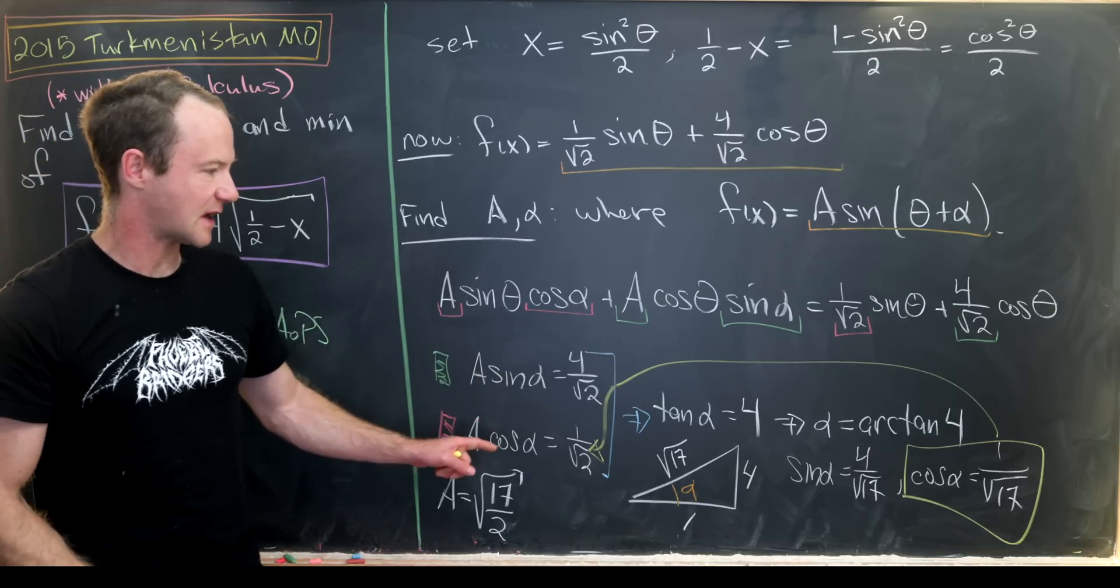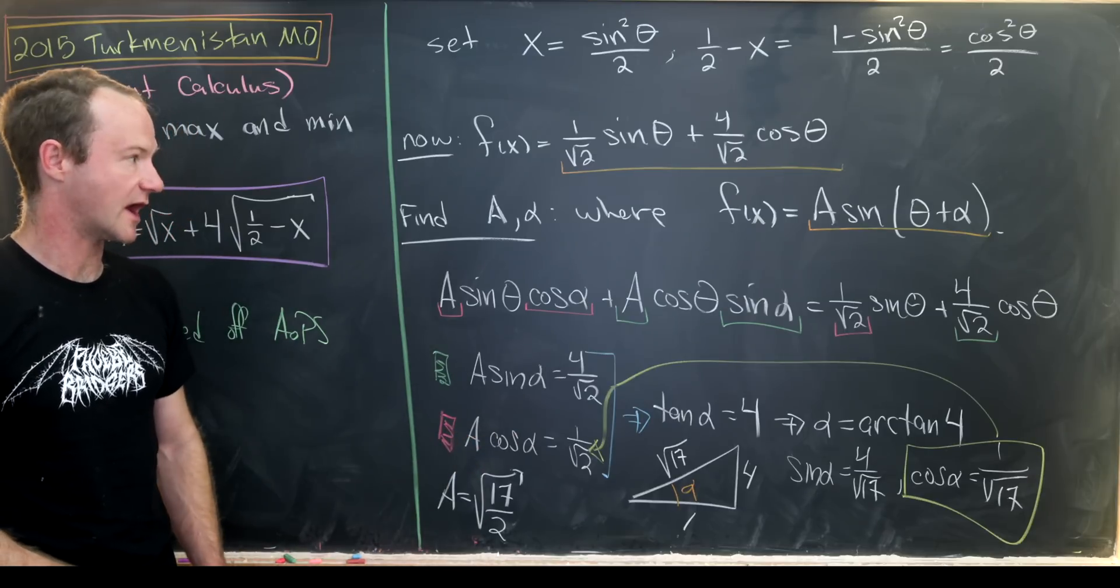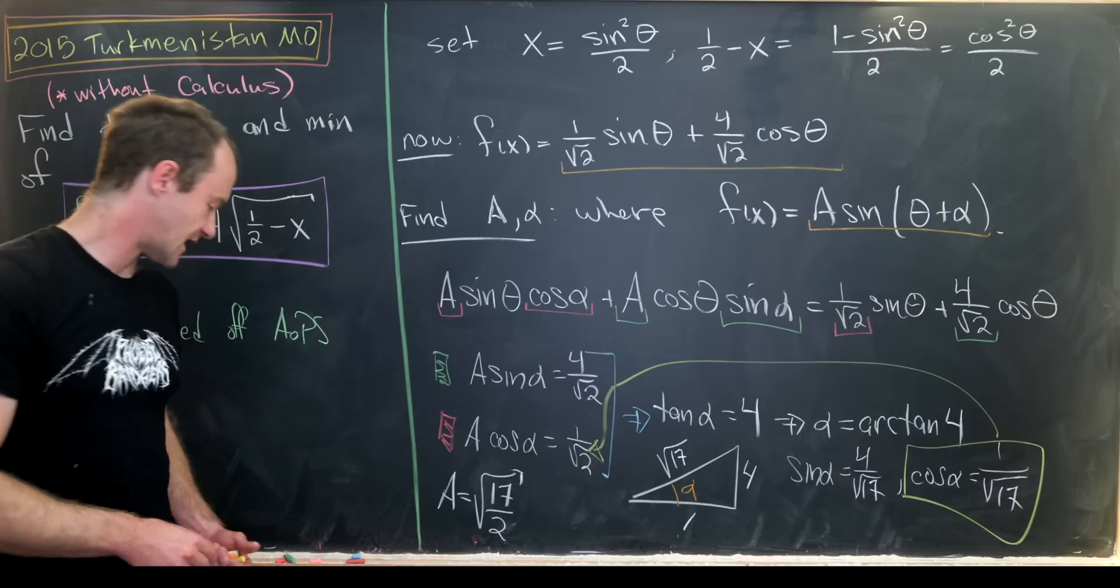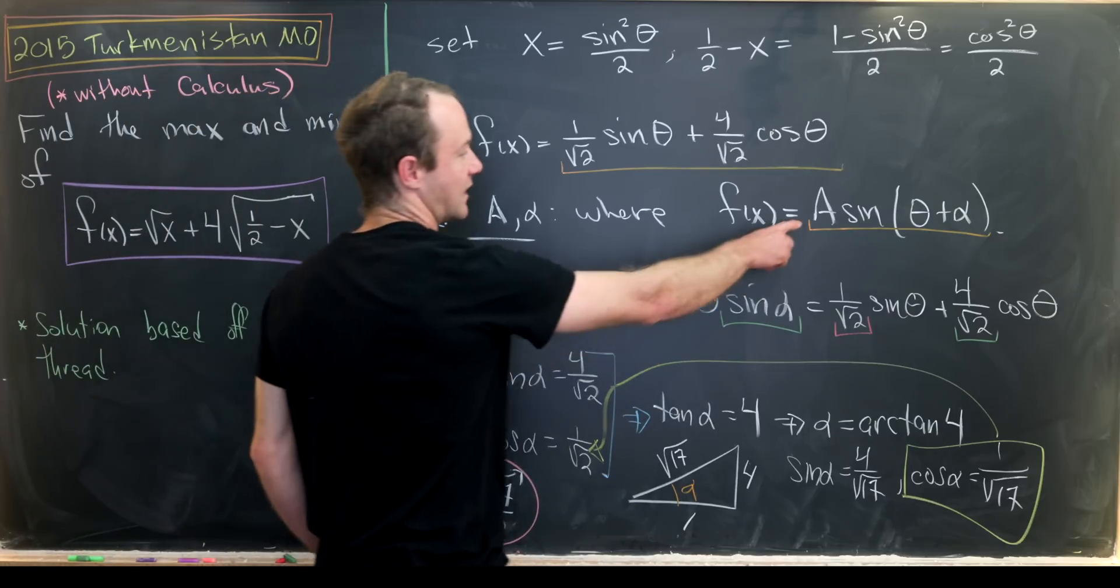And so again, that's just by plugging in cosine of alpha equals one over the square root of 17 and then solving for A. So that means we can take this value for A and plug it in up here.